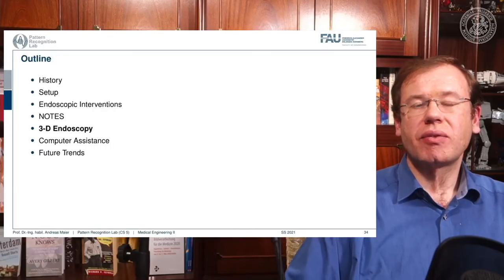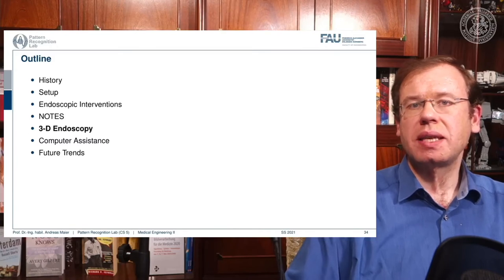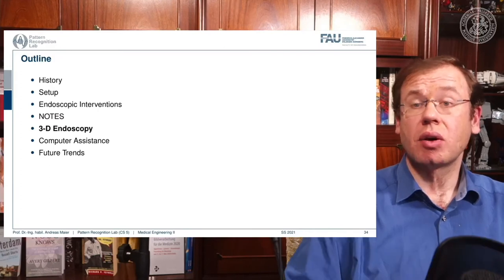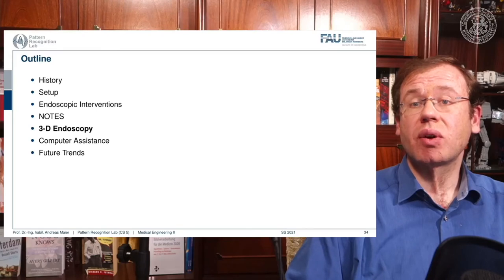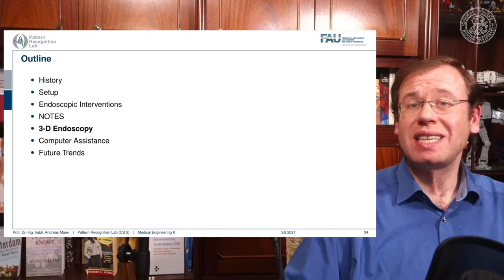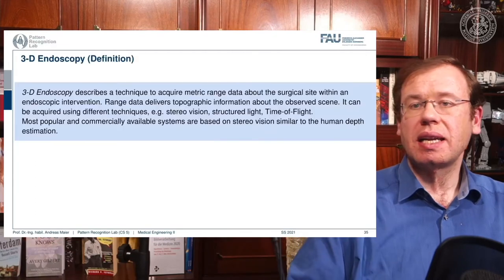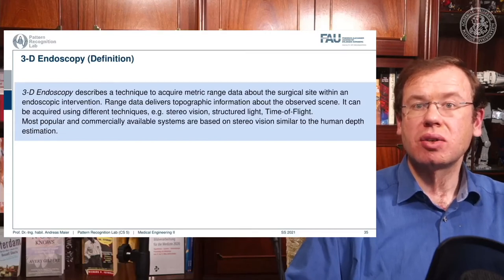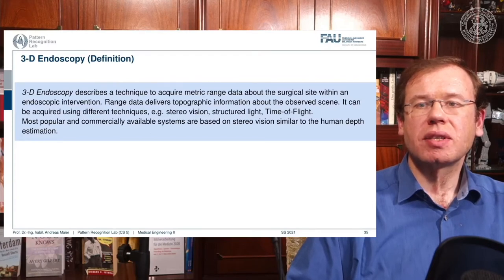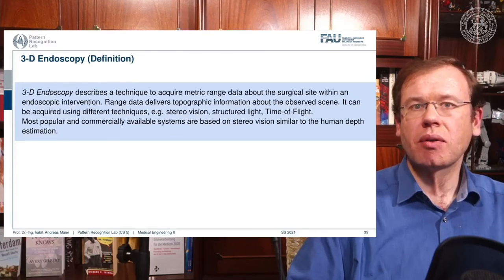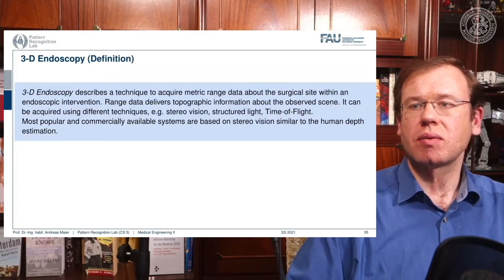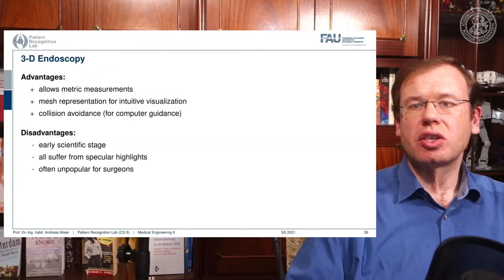Another very important topic is 3D endoscopy, which could be a game changer for complex interventions like NOTES. The idea is not just to see inside but to get a real 3D reconstruction of the tissues inside the body. In 3D endoscopy, we acquire metric range data — depth data like surfaces or point clouds of the surgical site — using an endoscopic intervention. This range data delivers topographic information about the observed scene and can be acquired using different techniques.